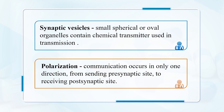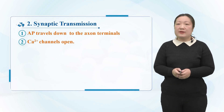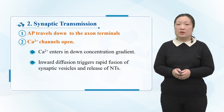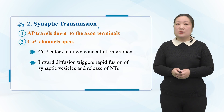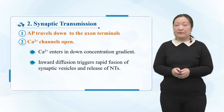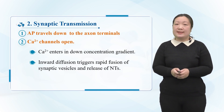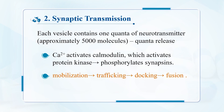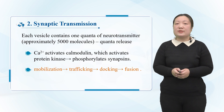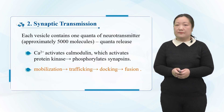The nerve impulse is transmitted to depolarize the pre-synaptic membrane. The Ca²⁺ channel opens and Ca²⁺ flows into the pre-synaptic membrane. The transmitter is released to the synaptic cleft, spreads to the post-synaptic membrane, and binds to specific receptors or chemical-gated channels in the post-synaptic membrane. This changes the permeability of the post-synaptic membrane to certain ions, causing ions to enter the post-synaptic membrane, generating post-synaptic potentials, and ultimately post-synaptic neuron excitement or inhibition.